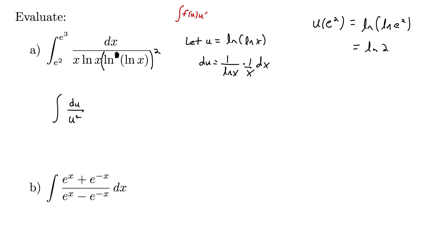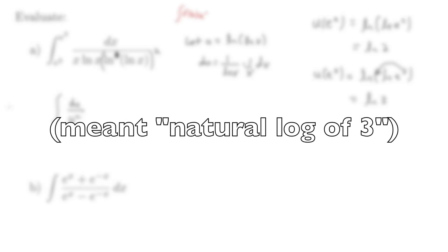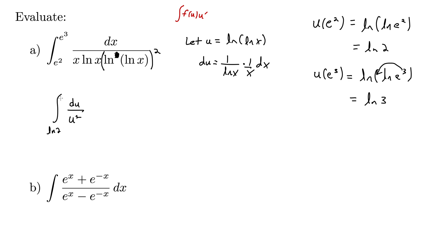For the upper limit, u of e cubed is natural log of natural log of e cubed. The cubed comes down to the front and natural log of e is 1, so we are left with natural log of 3. Thus our integral goes from natural log of 2 to natural log of 3 of du over u squared, which is u to the negative 2. Adding 1 and dividing, this becomes u to the negative 1 over negative 1, evaluated from natural log of 2 to natural log of 3.